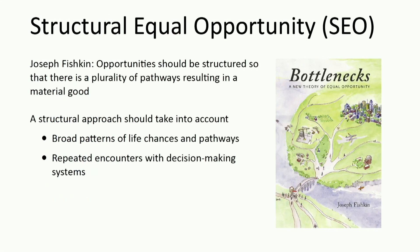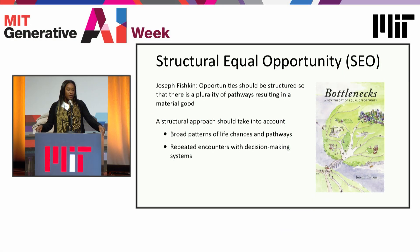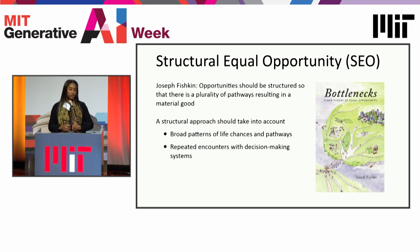A lot of what a couple of scholars and I have been advocating is for a more pluralistic approach to thinking about how opportunities should be allocated. In particular, we've been leaning a lot on Joseph Fishkin's book, which is called Bottlenecks: A New Theory of Equal Opportunity, which advocates an approach whereby opportunities should be structured so that there are a plurality of pathways that result in a material good. This approach would take into account the broad patterns and life chances for each individual and their repeated encounters with decision-making systems.